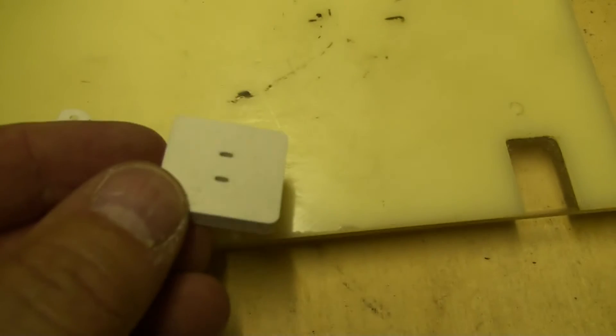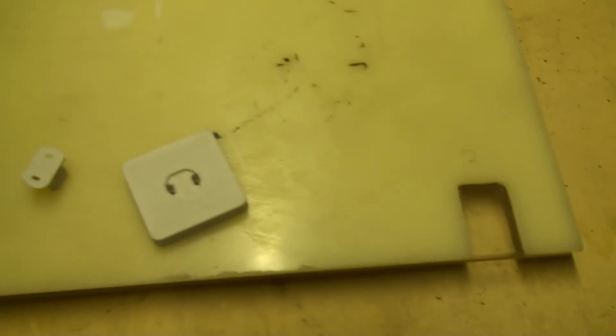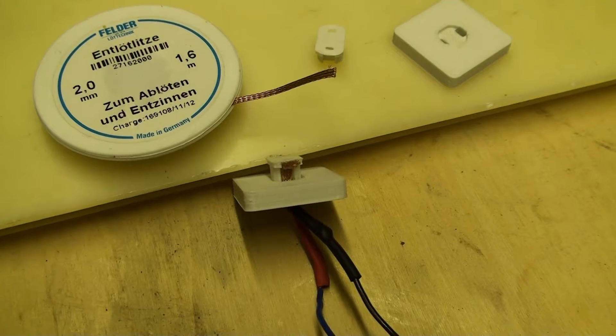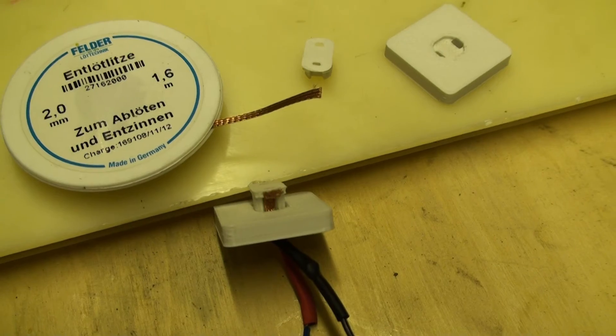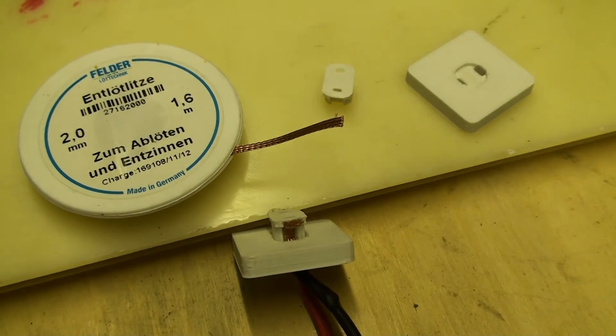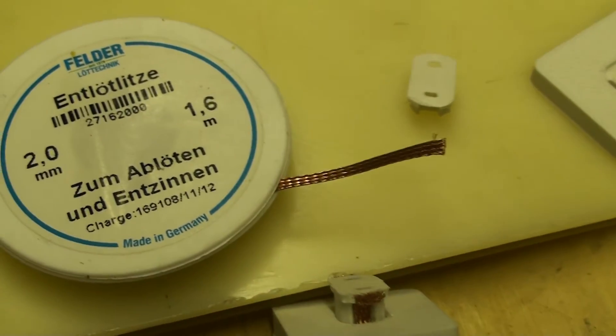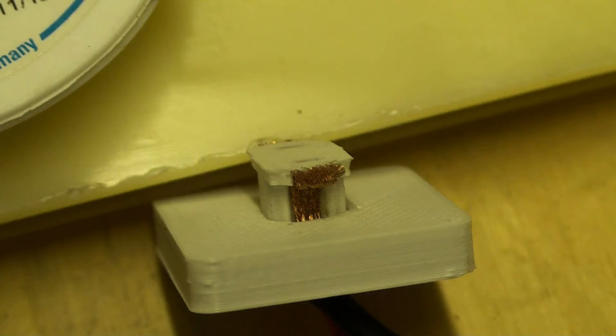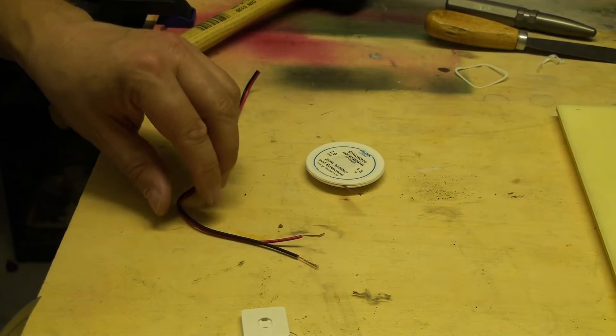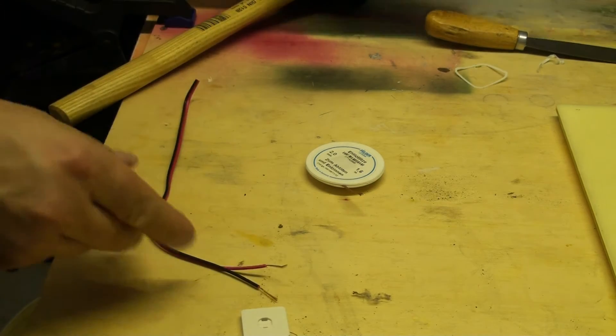Depending on which cable you want to use, you have to widen these holes a little bit. For my first testing part I used some desoldering wire, as you can see here. This time I will use some real wire.